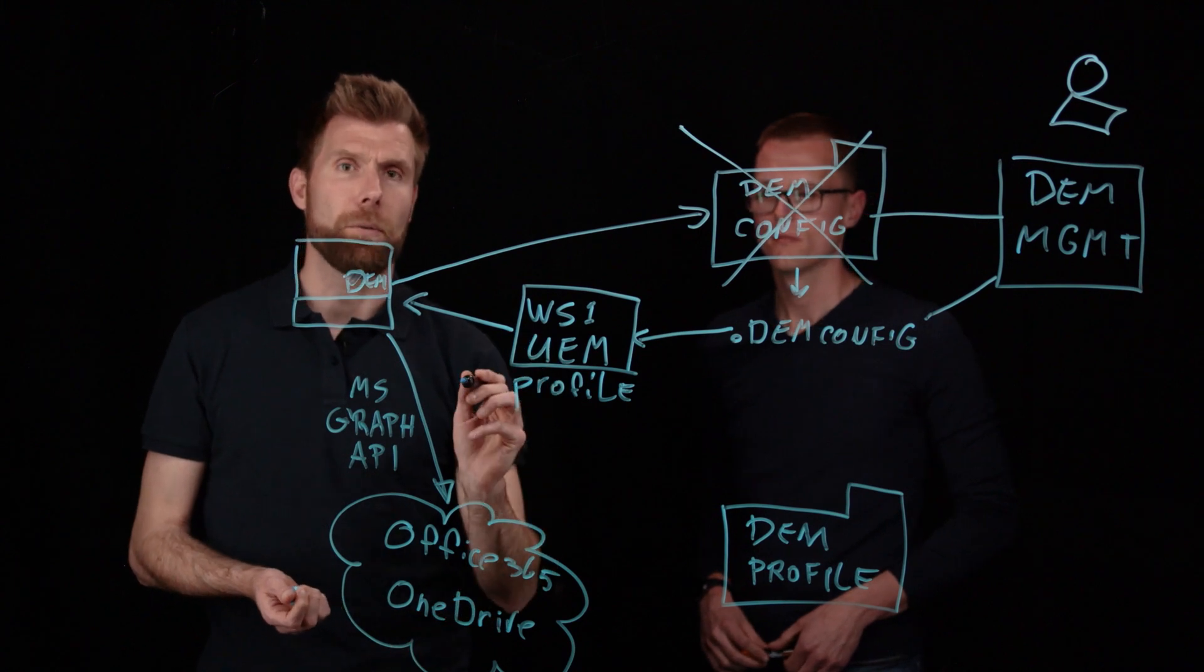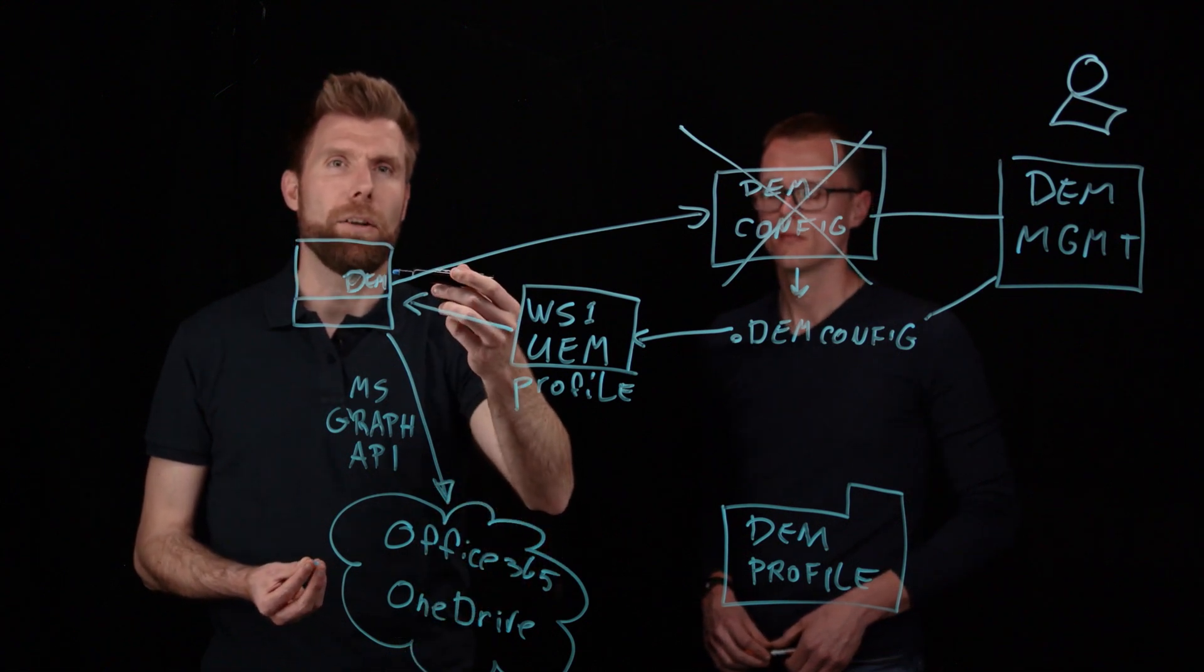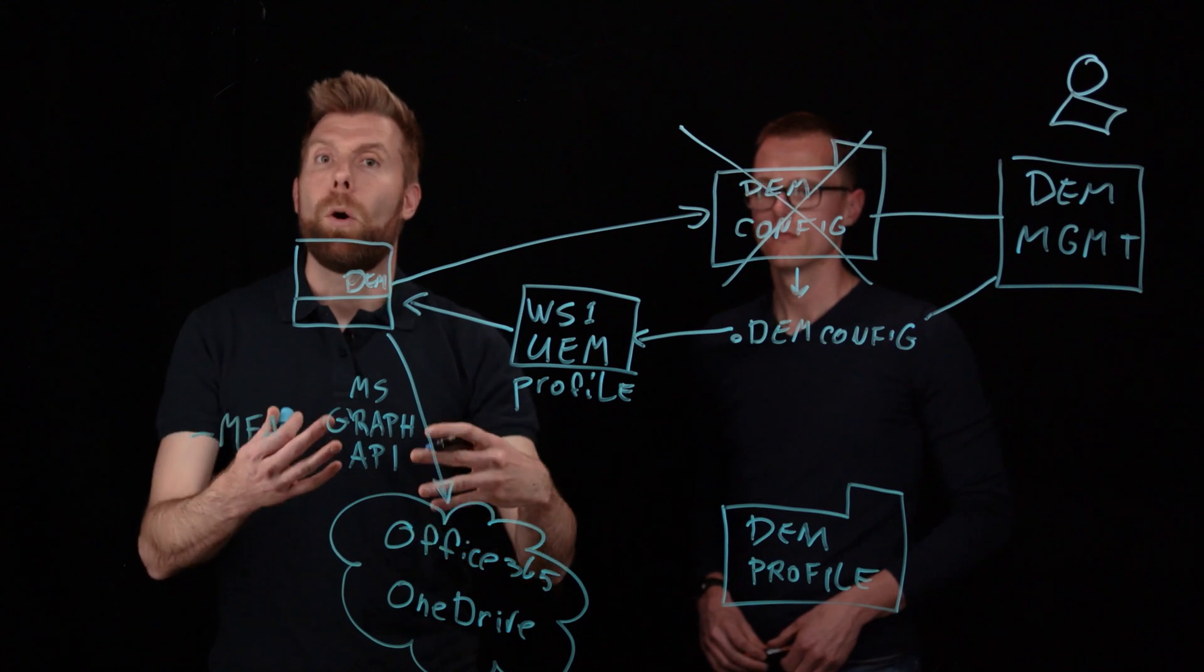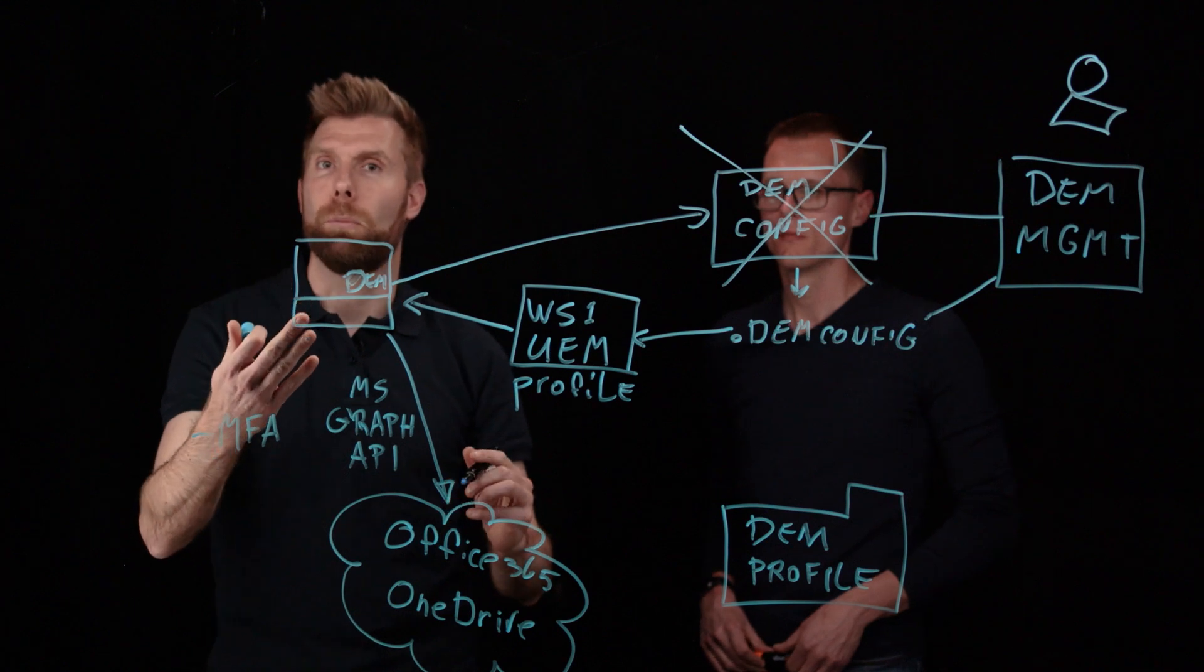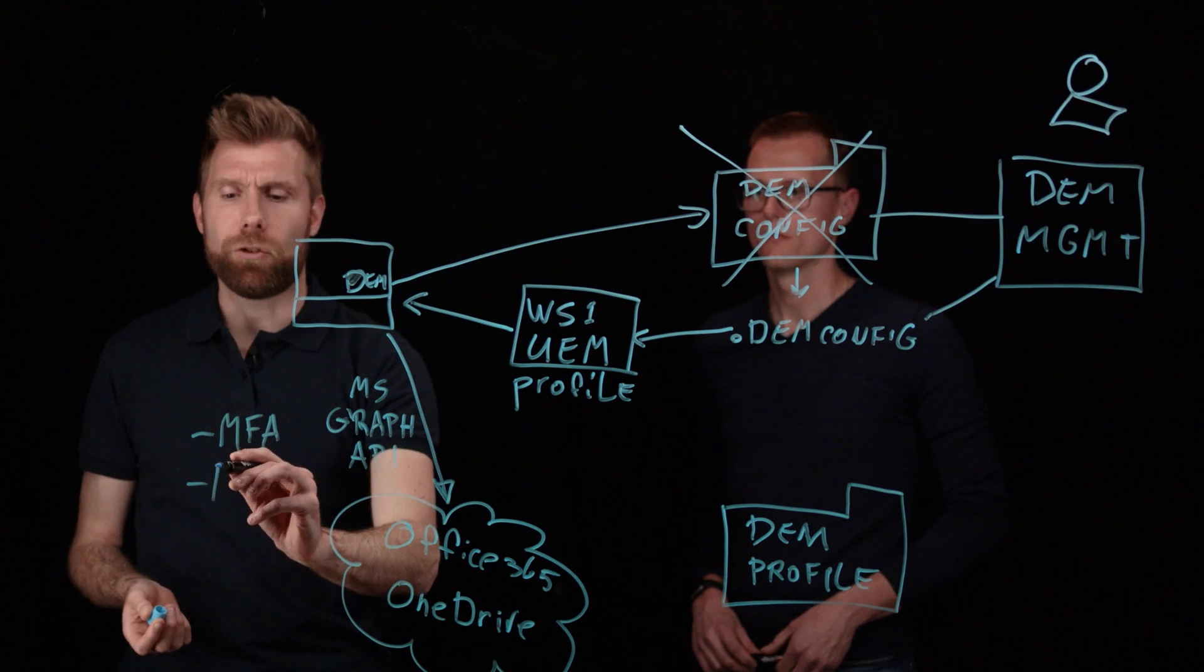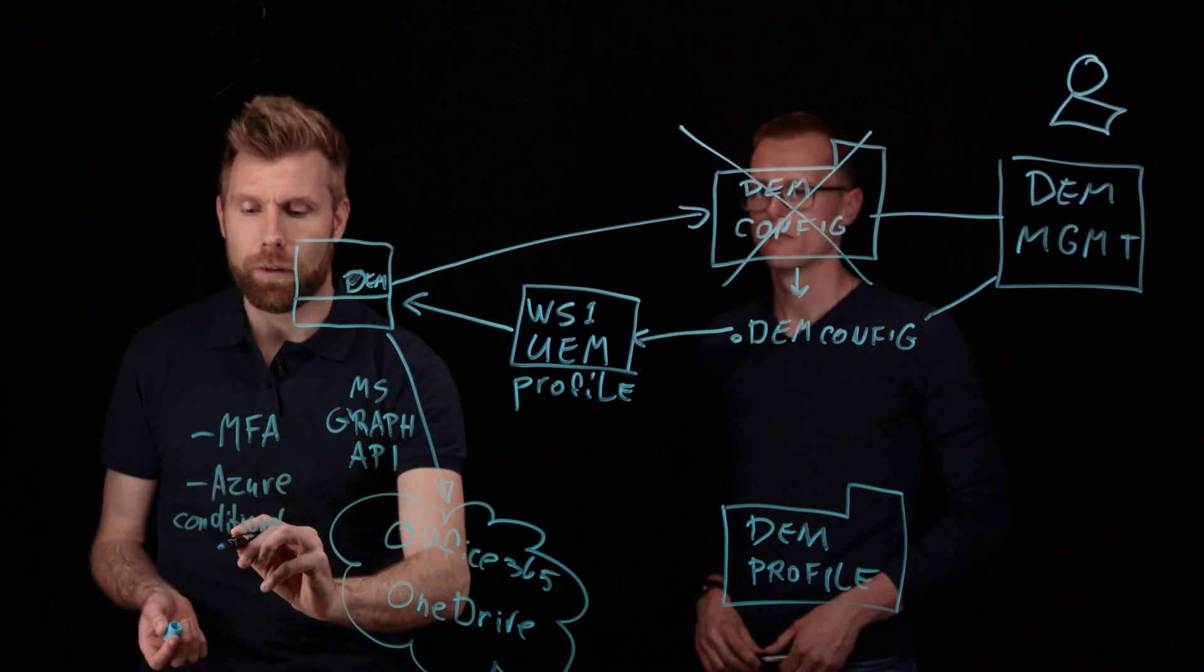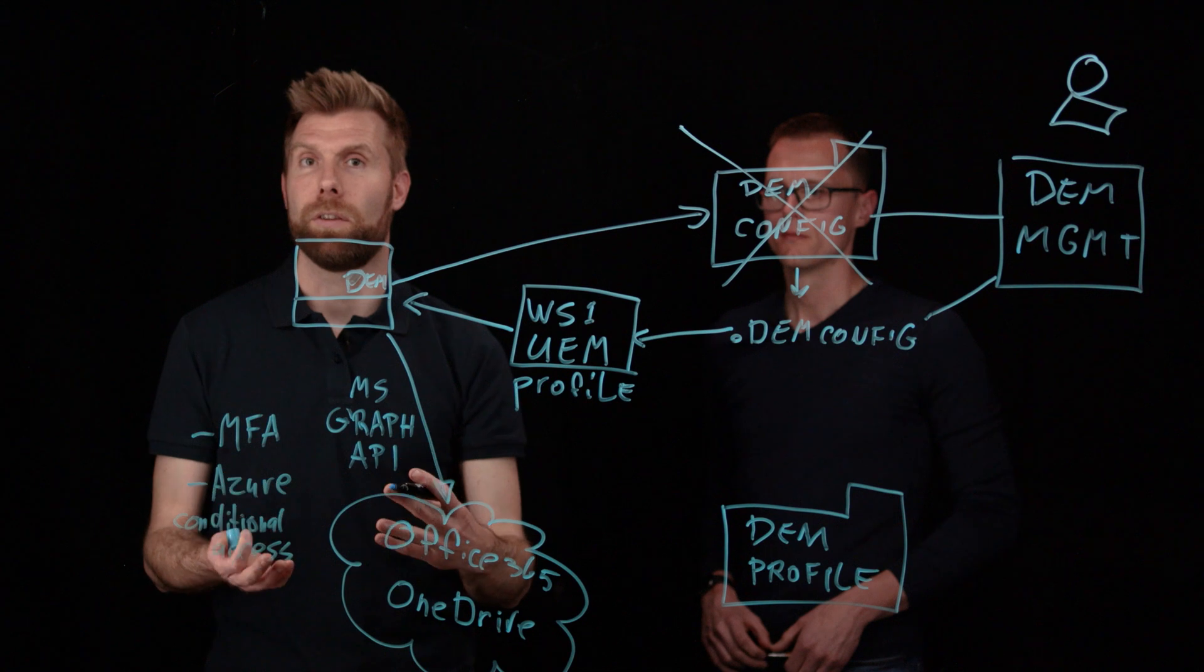Now there are some requirements to be able to support this because the DEM agent runs very early at logon. That means that there can be no user interaction. So if you have multi-factor authentication enabled, that will not work because there's no way the user can input a multi-factor because the client cannot ask for a multi-factor because there is no user interface yet. Same goes for the Azure Conditional Access. With the current release, this is not supported because the MS Graph API doesn't support MS Conditional Access.